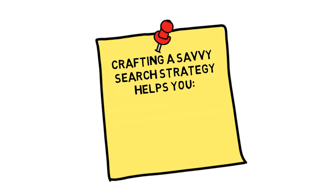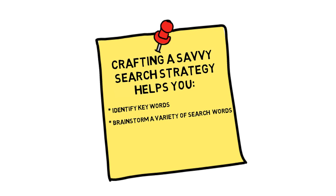In this video, you'll learn how to identify keywords, then brainstorm a variety of search terms to help you save time and search strategically.